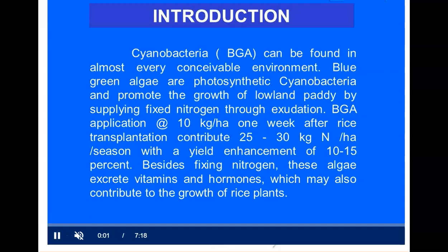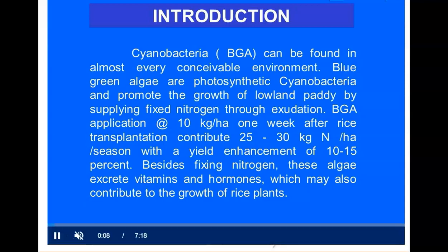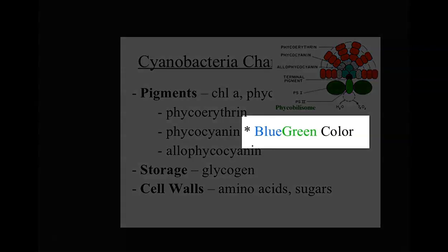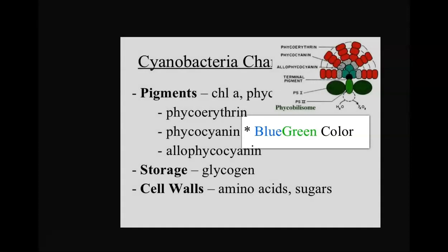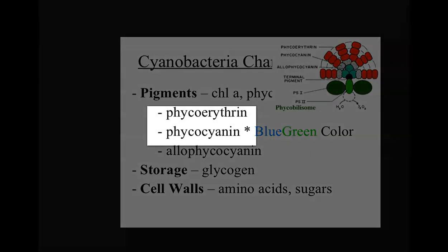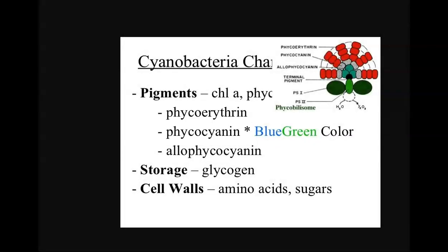The other name for blue-green algae is cyanobacteria. It is a kind of bacteria present in different kinds of environments. It is referred to as blue-green algae mainly due to the presence of blue-green pigments, which includes phycoerythrin as well as phycocyanin.